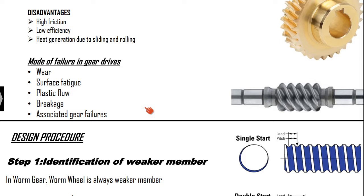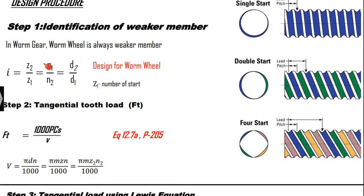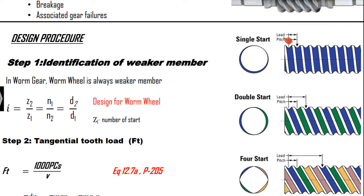The initial step is the identification of the weaker member. For a worm, there is no need to identify the weaker member because the gear is obviously going to be the weaker member — the thread is continuous, so the worm is always the stronger member. We have to design the spur gear, which is the worm wheel. When you take the gear ratio Z2 by Z1, Z1 can be 1, 2, 3, or 4. Single start means one thread is starting; double start means two. For a single start, pitch equals lead. For double start, lead is twice the pitch. Z1 is not the number of teeth — it is called the number of starts.